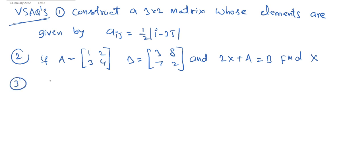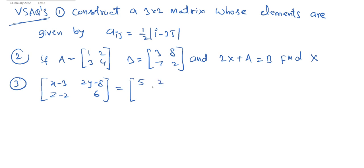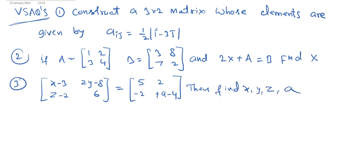Third question: if the 2×2 matrix [x−3, 2y−8; z−2, 6] is equal to [5, 2; −2, a−4], then find x, y, z, and a.